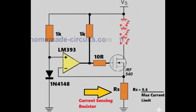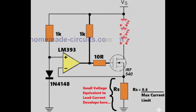Whenever current flows through the load the same current also flows through the sense resistor. Because of this a small voltage drop appears across the sense resistor. This voltage drop is directly proportional to the load current. More current means more voltage across the sense resistor.